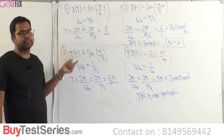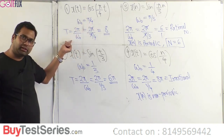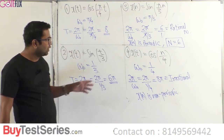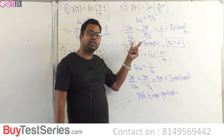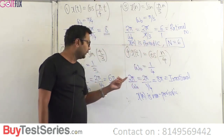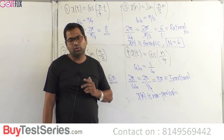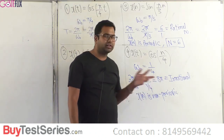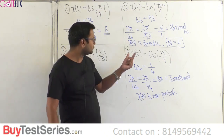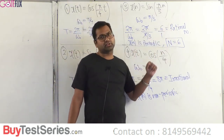To summarize: in continuous time, there is no need to check rational or irrational — just take ω₀, calculate T = 2π/ω₀, and whatever you get is the correct answer. In discrete time, check whether 2π/ω₀ is rational: if rational, it is periodic; if irrational, non-periodic. Examples of irrational numbers include π, √2, √3, and √5. When the ratio is rational, the period N is the numerator of the ratio.